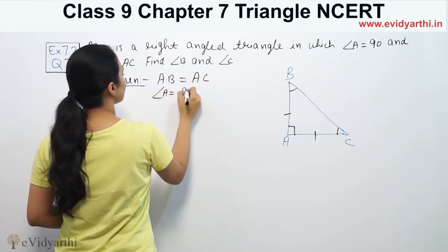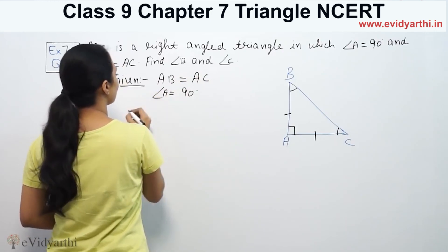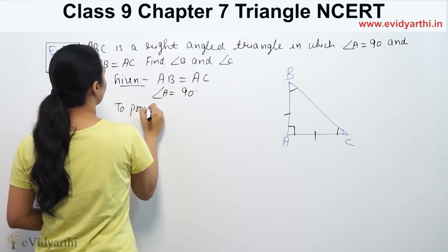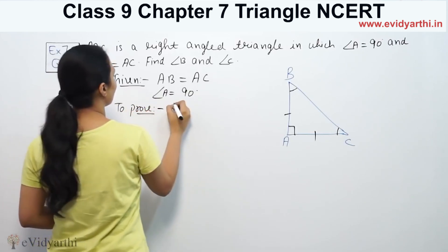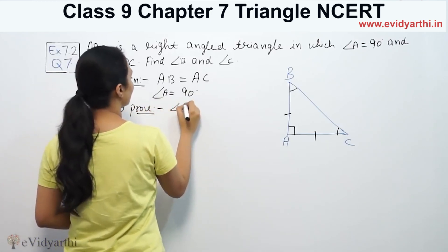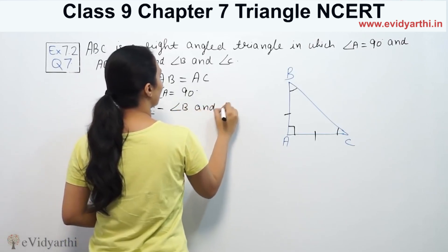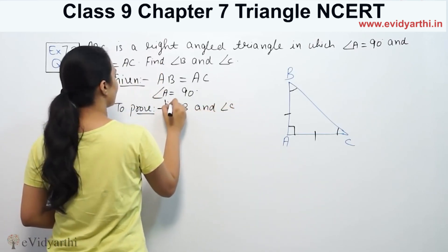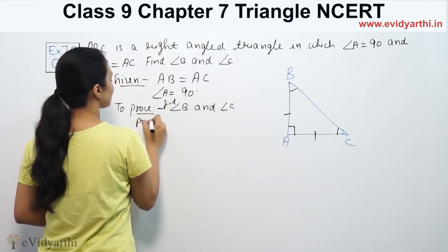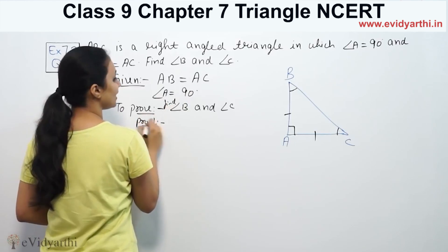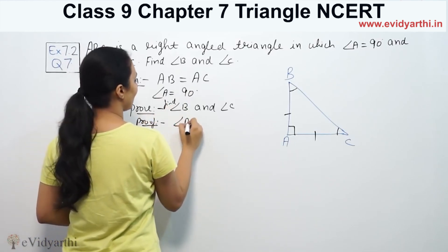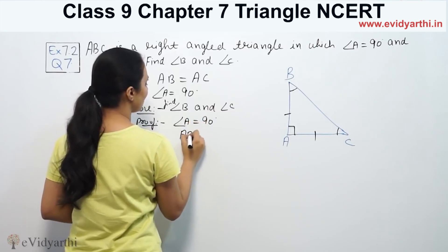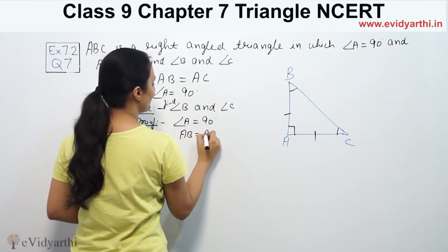Angle A is 90 degrees — that is given. AB is equal to AC — that is also given. We need to find angle B and angle C.